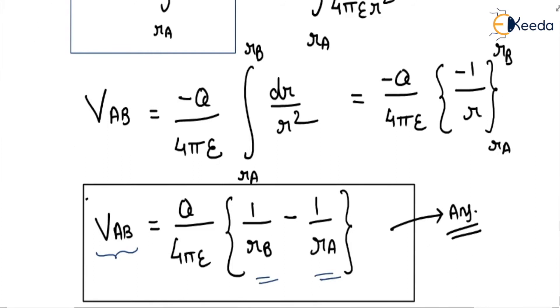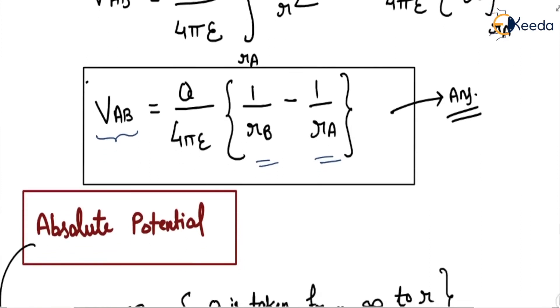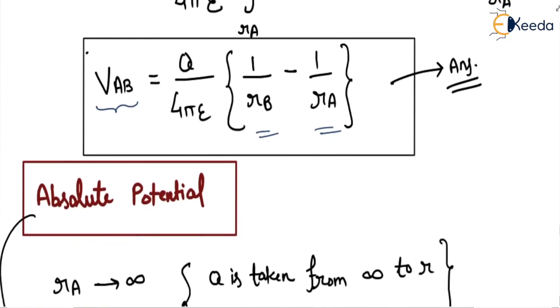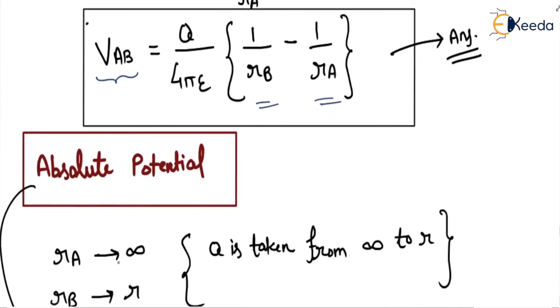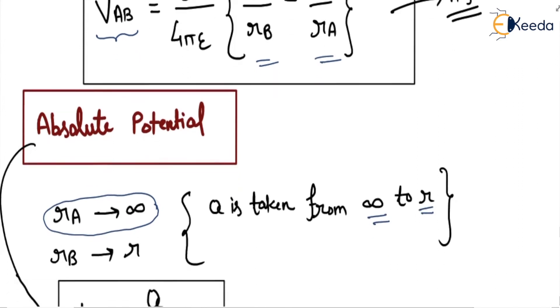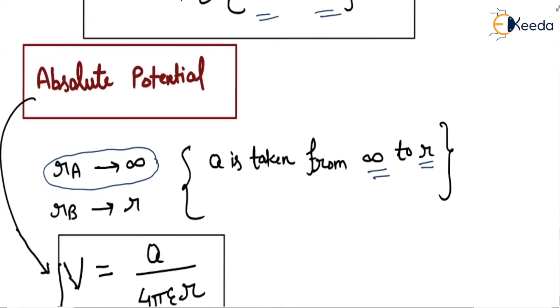In this question, there is one important concept of absolute potential. If rA is taken as infinity, it means charge is taken from infinity to any distance r, so rB will approach r.